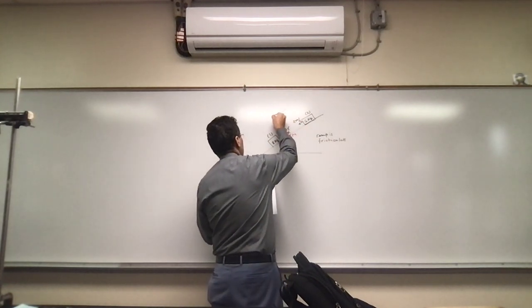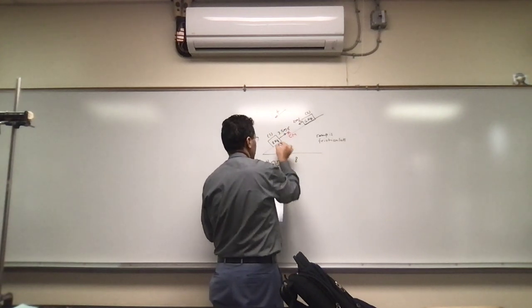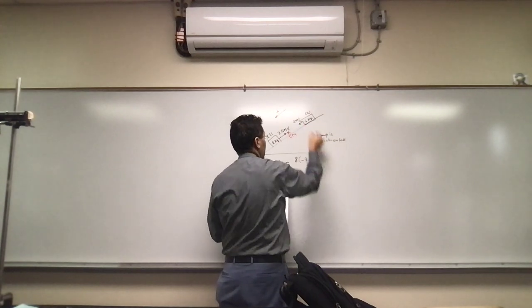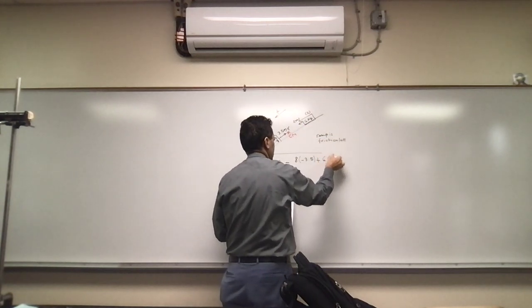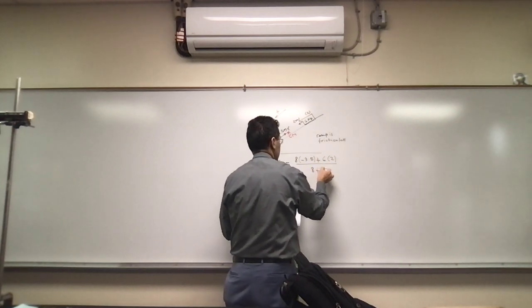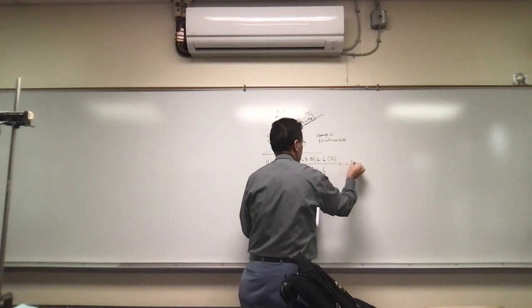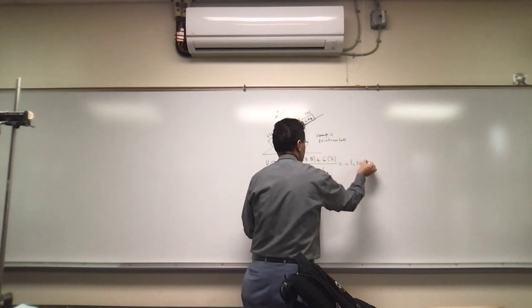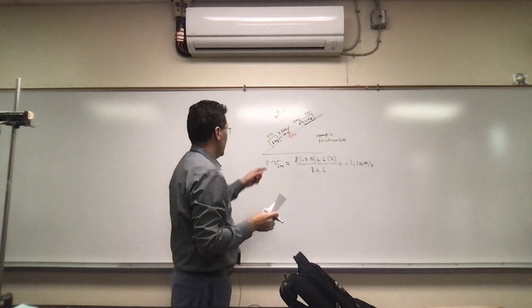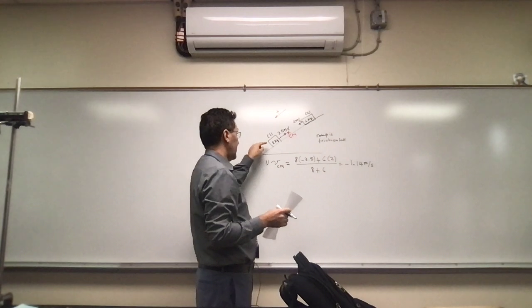Let's assume that down is positive. So in that case it's going to be the mass of this one times its velocity, which is negative 3.5, plus the mass of two times its velocity, divided by the sum of the masses. That should give us about negative 1.14 meters per second, which kind of makes sense. This one here has a bigger mass and a bigger velocity, so the center of mass has to be moving up.